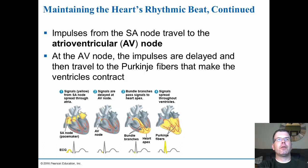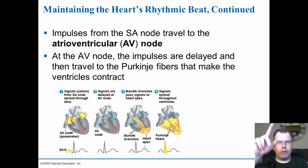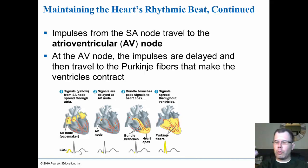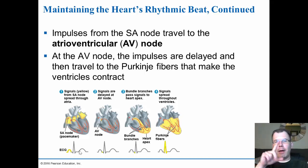The impulses from the SA node travel to the atrioventricular node, where the impulses are delayed, and then travel to the Purkinje fibers which make the ventricles contract. It starts at the SA node, which gets the signal from the brain, then sends it down to the AV node, which goes down to the Purkinje fibers, which then cause the ventricle to contract and squeeze the blood. If we see abnormalities — weird waves or an irregular heartbeat — they're looking at the ECG to make sure the heartbeat is normal.